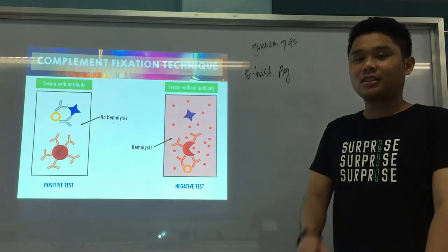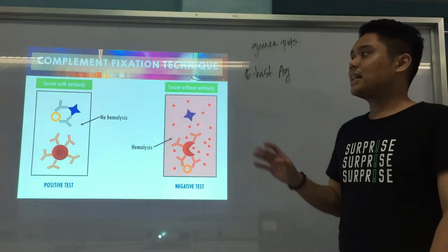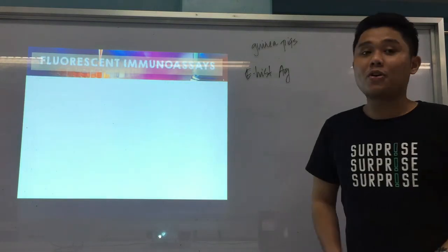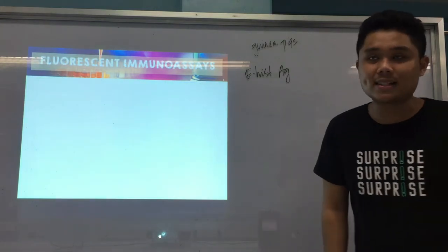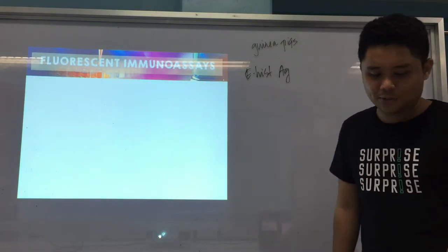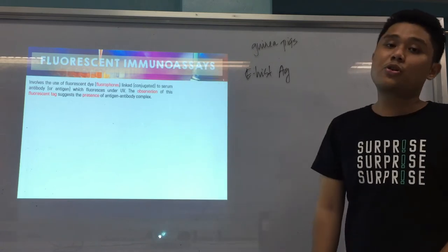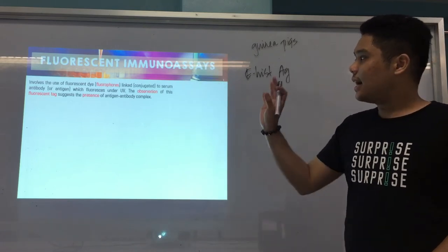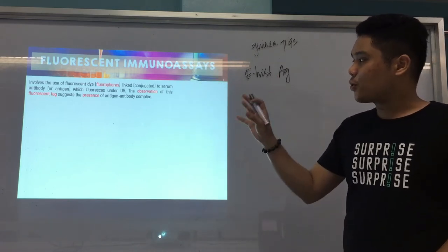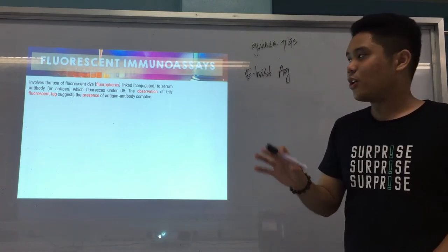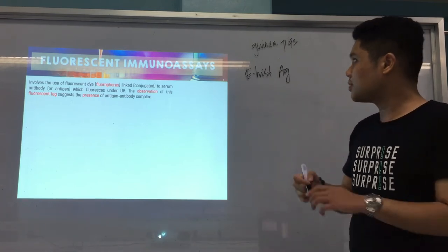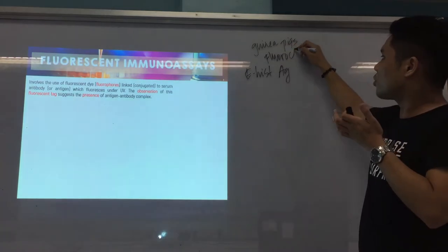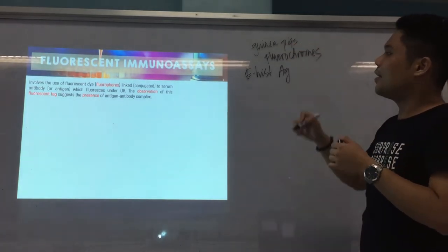That's the first immunoassay: complement fixation. Now we go to fluorescent immunoassays. By the name itself, we use fluorescent dyes or fluorophores. These fluorophores are attached to an antibody and serve as a label. We then observe this fluorescent label, which suggests the presence of your antigen-antibody complex. The common fluorophores used are FITC — fluorescein isothiocyanate — which emits a green or apple green fluorescence.